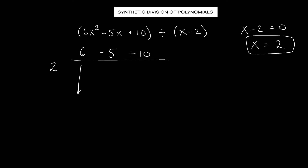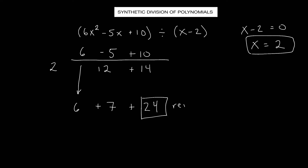First step, we're going to bring down the 6. Then we're going to multiply it: 6 times 2 gives us 12, and we write that here. Now we're going to add negative 5 and 12 — that gives us a positive 7. Now we take that positive 7, multiply it by 2: 7 times 2 is 14. 10 and 14 give us 24. This very last one is going to be your remainder.